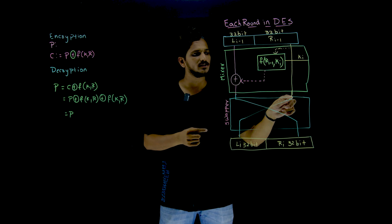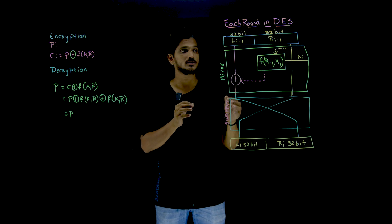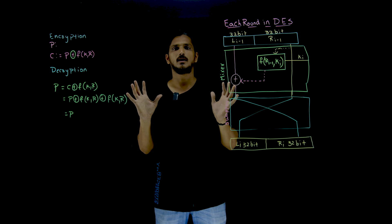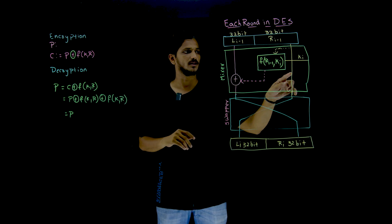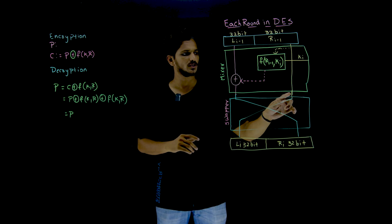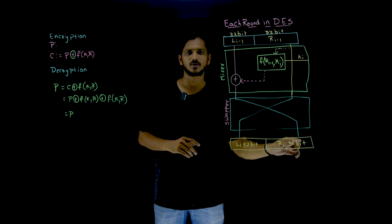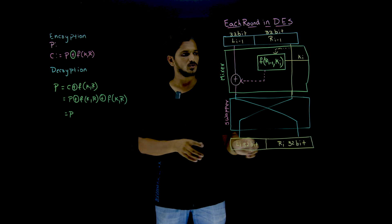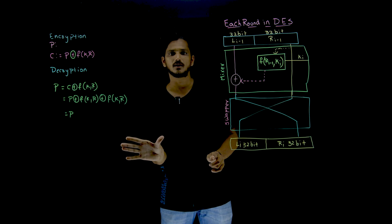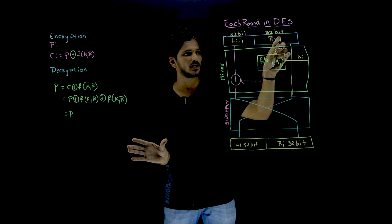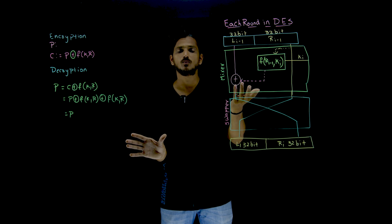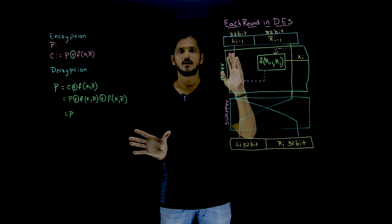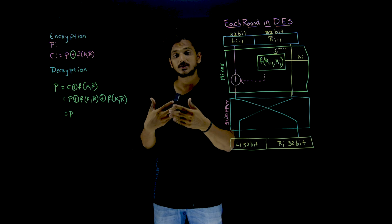The right half is sent as-is to the next round. This is the key point to understand — without this, Feistel Cipher will not work. See here: the right-hand side is swapped — right side comes to the left side and left side bits go to the right side. During decryption, this right-hand side is needed as input to the function again. That is why we are dividing into two halves — so that during decryption, this right-hand side can again be used, because Feistel Cipher works this way.